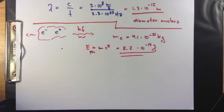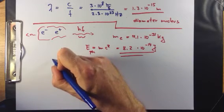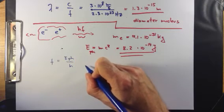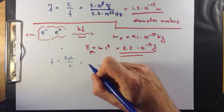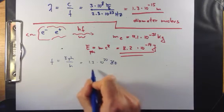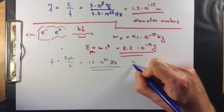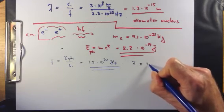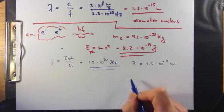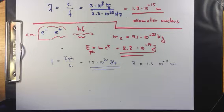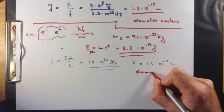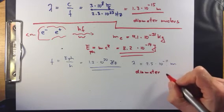That's the photon energy. This can again be turned into a frequency by dividing by Planck's constant. F is equal to E photon divided by Planck's constant, which in this case gives 1.2 times 10 to the 20 hertz. The corresponding wavelength is equal to 2.5 times 10 to the minus 11 meter, which is now of the order of the diameter of the atom. So much larger than the wavelengths we obtained earlier.